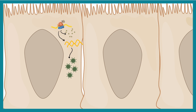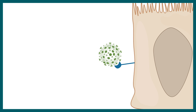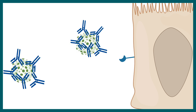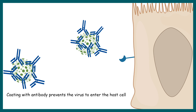Our body's immune system takes this very seriously and mounts an immune response against these viruses. The virus enters the cell via a specific receptor, so the body generates specific antibodies against the viruses which coat or opsonize them. Once these viruses are coated with antibodies, it is very hard for them to interact with the receptors and gain entry into the cell, making them weak. There is also antibody-dependent cellular cytotoxicity, which allows immune cells such as macrophages and dendritic cells to engulf these pathogens.